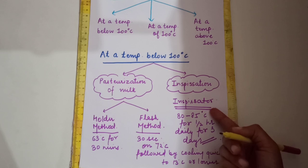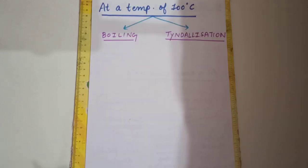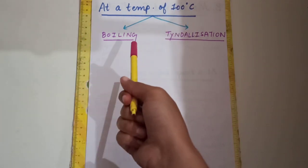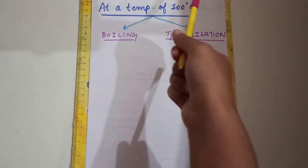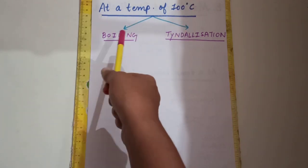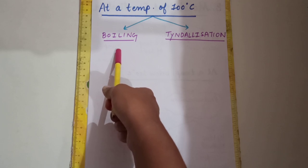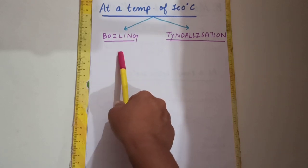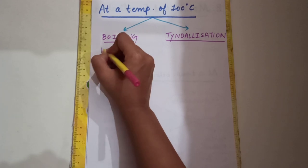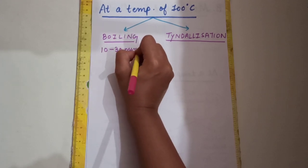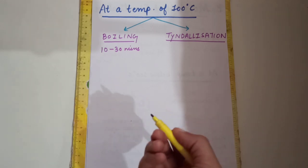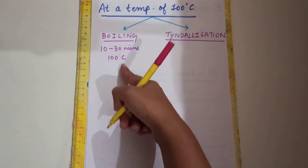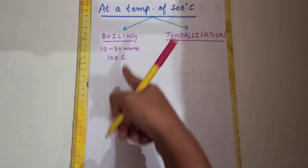Now we talk about methods at 100 degrees Celsius. We previously discussed below 100°C; now at 100°C there are two methods: boiling and tyndallization. Boiling is a very common method done at home. We boil items in water at 100 degrees Celsius for 10 to 30 minutes.